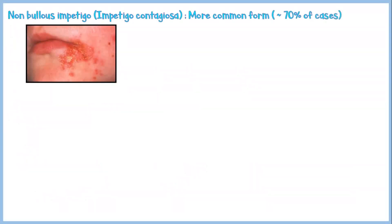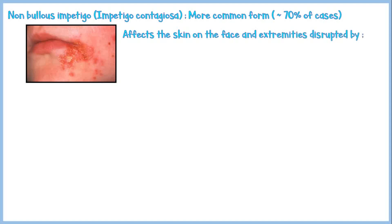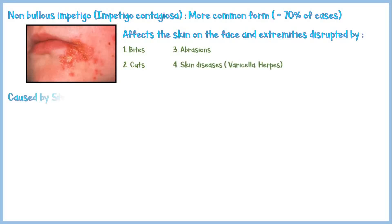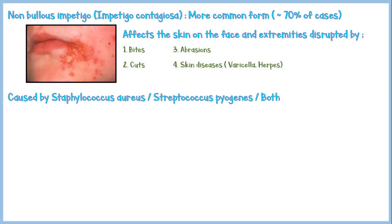Non-bullous impetigo, also known as impetigo contagiosa, is the more common form of impetigo. It usually affects the skin on the face and extremities disrupted by bites, cuts, abrasions, or any other trauma, and skin diseases like varicella and herpes. Non-bullous type may be caused by Staphylococcus aureus, Streptococcus pyogenes, or both.